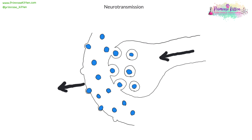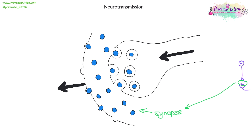Neurotransmission happens with neurotransmitters, and they're a type of chemical. This over here is what we call the synapse. Remember the last diagram — the relay neuron and the motor neuron. The synapse is the little gap between the two.